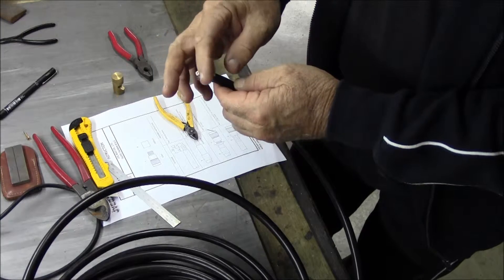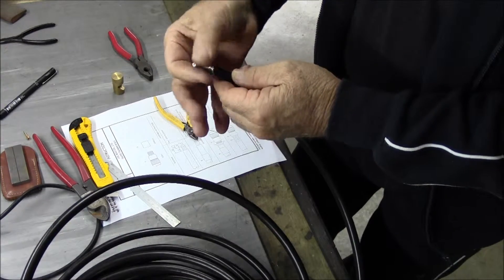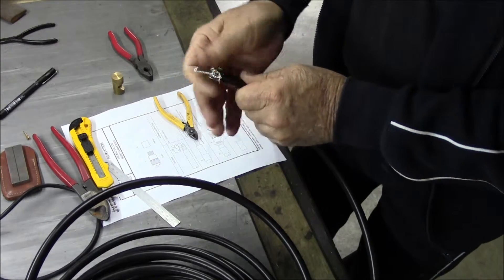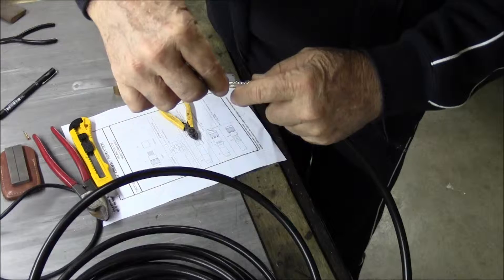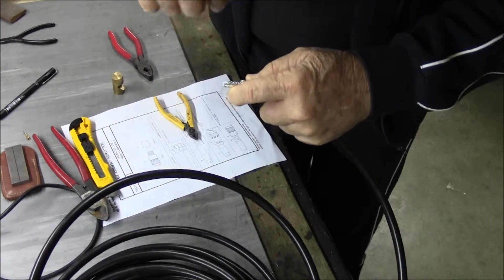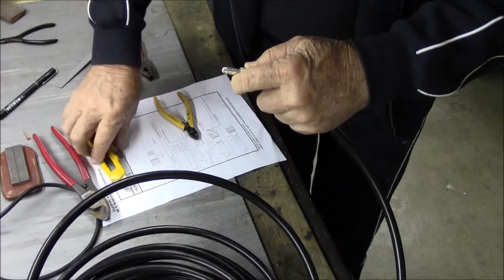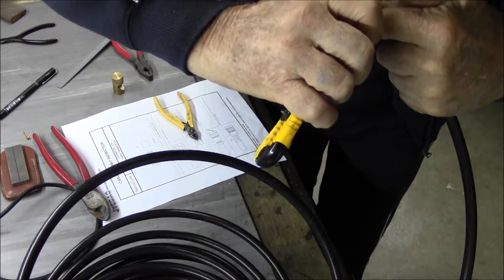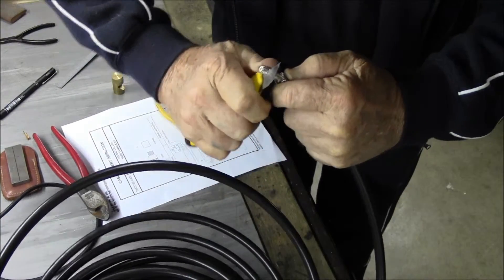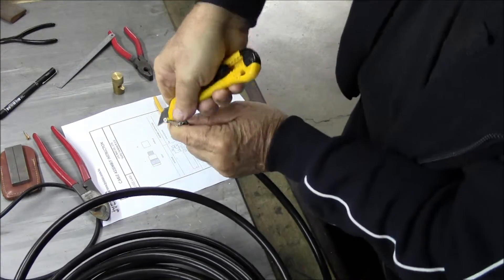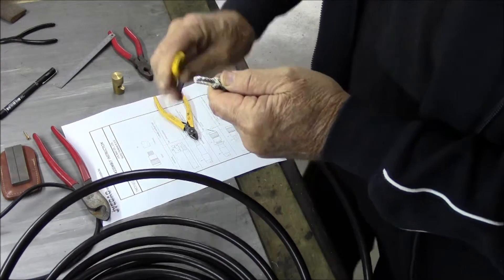Flare back the braid. Now what we're going to do is measure in five millimeters from this end, which is right there. Grab a knife and cut all the way around, careful not to score too deep into the center conductor.